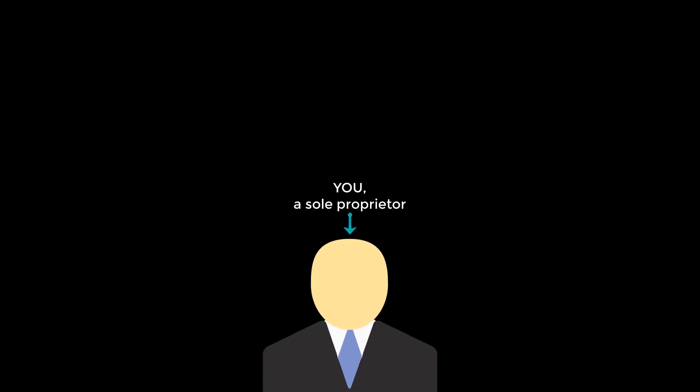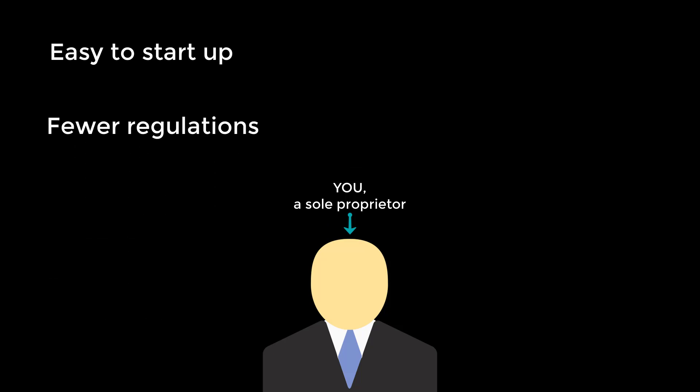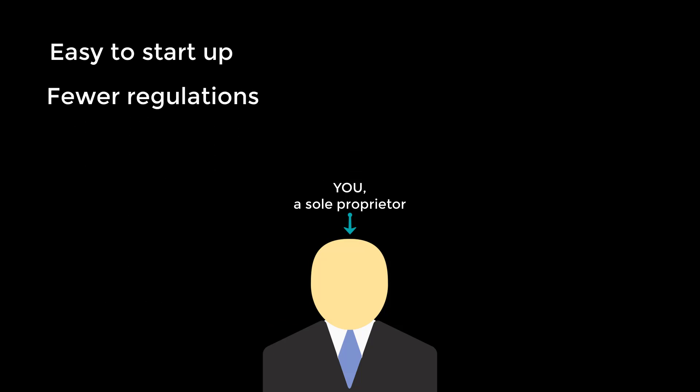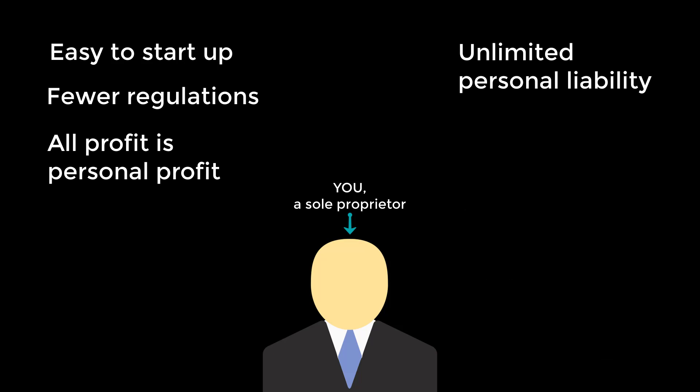Another consideration is how you want to structure your business. Technically, you could just start buying equipment, making your product, and selling it all by yourself — that'd be called a sole proprietorship, one of the simplest business structures in Canada. It's great because it's the most hassle-free form to start up, it's not as heavily regulated as other business structures, and you get to keep all the profits for yourself. But there's a catch: you've got unlimited personal liability for any business debts or obligations because there's no legal separation between you and your business.